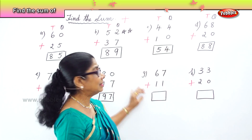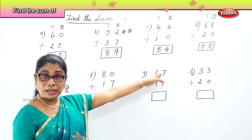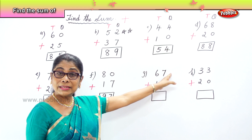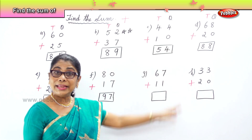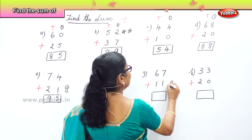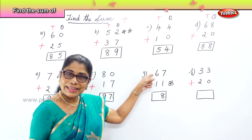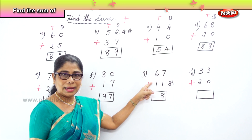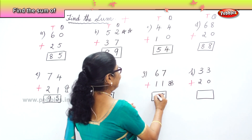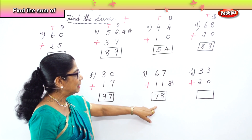Find the sum of 67 and 11. Let's look at the ones place. You have 7 ones and 1 one. 7 plus 1 is 8. So you have 8 ones. Now you have 6 tens in the tens place and 1 ten in the tens place. 6 tens plus 1 ten is 7 tens. So the sum of 67 plus 11 is 78.